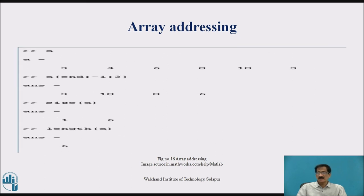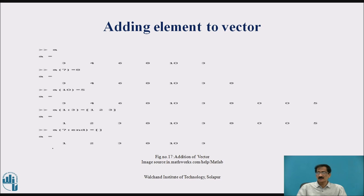This is again array addressing. These commands will give the length and size of the array. We can add an element to a given vector. For example, A(7) = 8 will add the element 8 at the 7th position. Similarly, A(10) = 5 will add the number 5 at the 10th position. The 8th and 9th positions are not mentioned and will be treated as 0.